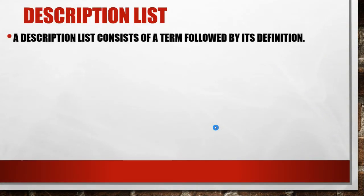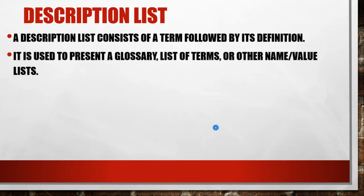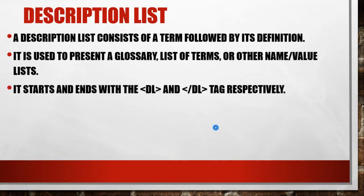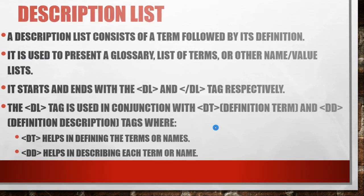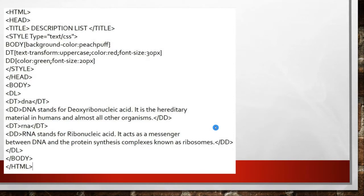Next we are going to see about description list. A description list is a term that comes along with its definition. If you want to define some set of terms, you can use this description list. It is used to present a glossary, a list of terms, or other name-value pairs. We use the dl tag for description list, and under it we have dt for definition term and dd for definition description.